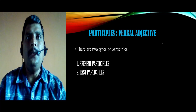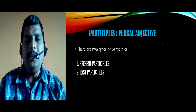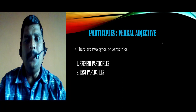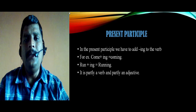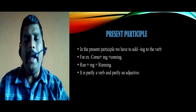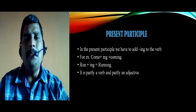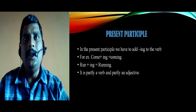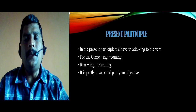The third topic is participles — we call them verbal adjectives. There are two types of participles: first, the present participle, and second, the past participle. For the present participle, we add '-ing' to the verb. For example: 'come' + ing = 'coming'; 'run' + ing = 'running'. It is partly a verb and partly an adjective.